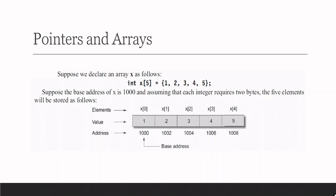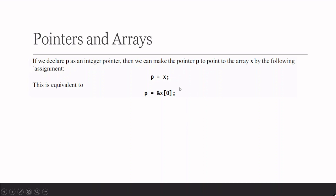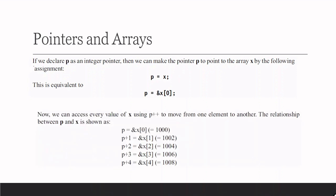Here 1000 is the base address. We can declare an integer pointer p, and writing p = x saves the base address of the array x. This is equivalent to writing p = &x[0]. So p = x is equivalent to p = &x[0], which is the first element.